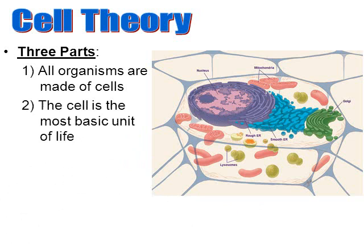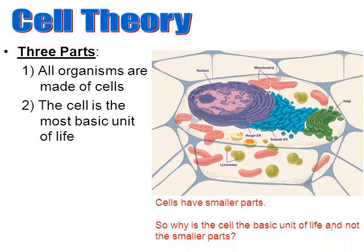Part two of the cell theory is that the cell is the most basic unit of life. Here we have a picture of a cell with parts labeled — lysosomes, nucleus, mitochondria, Golgi body, rough and smooth ER. You might ask: if cells clearly have smaller parts, why is the cell called the basic unit of life? The answer is straightforward — those smaller parts, like a mitochondria, rough ER, Golgi body, or lysosome, cannot function or operate on their own when removed from a cell. The basic unit of life that can survive and function on its own is the cell.